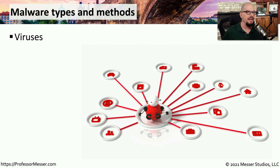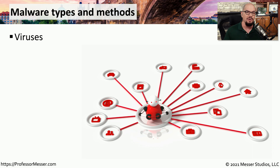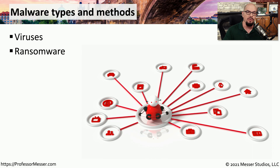There are many different types of malicious software. We commonly refer to viruses as a generic term for software that gets installed onto our system. But a virus is generally software that you as the end user would install, rather than the software finding a vulnerability to install itself onto your computer. We'll also talk about ransomware, which is a significant category of malware that you want to prevent from being installed onto your system.